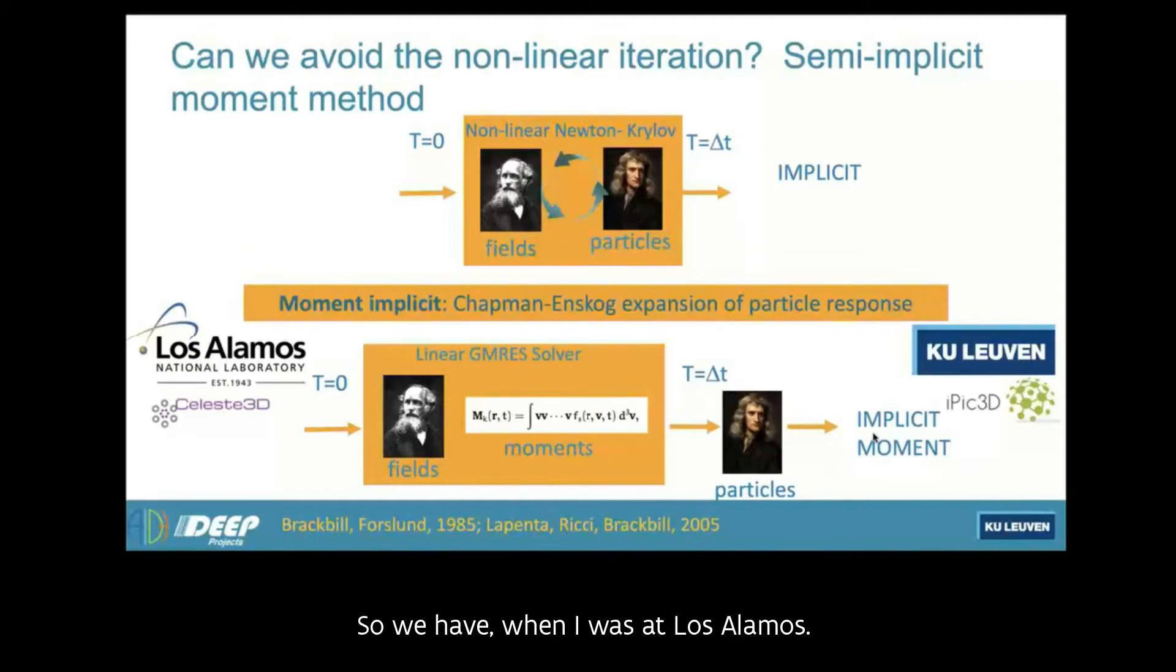There are some examples of this happening, some test codes, especially on shared memory computers, but there is no example of such a code for a distributed memory massively parallel computer. Too complicated. So when I was at Los Alamos, like I said, I started with this method that introduces an idea. I say, for the fields, I am using a grid. So what I need from the particle is only the information of what the particle will contribute to the grid. So if I can get a guess of that without actually having to move the particles, I can still break the link, but I do it in a smarter way than with the explicit method. This is called semi-implicit.